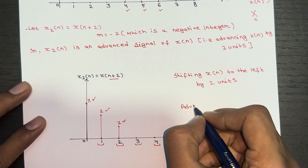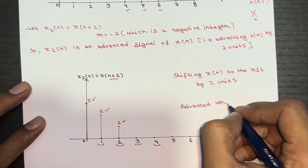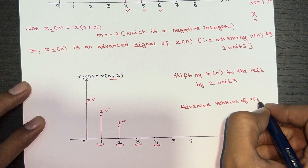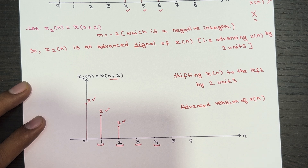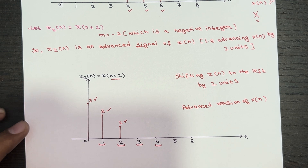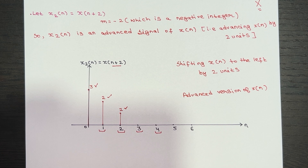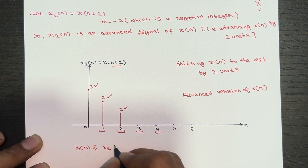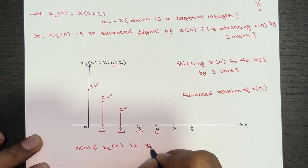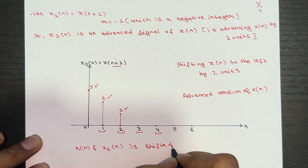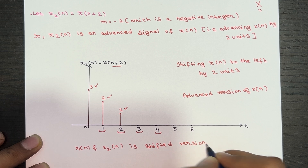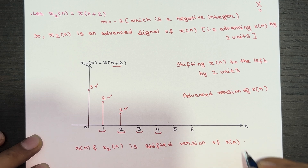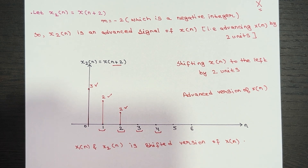This is called the advanced version of X of n. Why advanced? Because you're expecting some value at n equals 2, but the same value is now obtained at n equals 0 — you're getting the value in advance. In conclusion, X1 of n and X2 of n are both shifted versions of X of n.